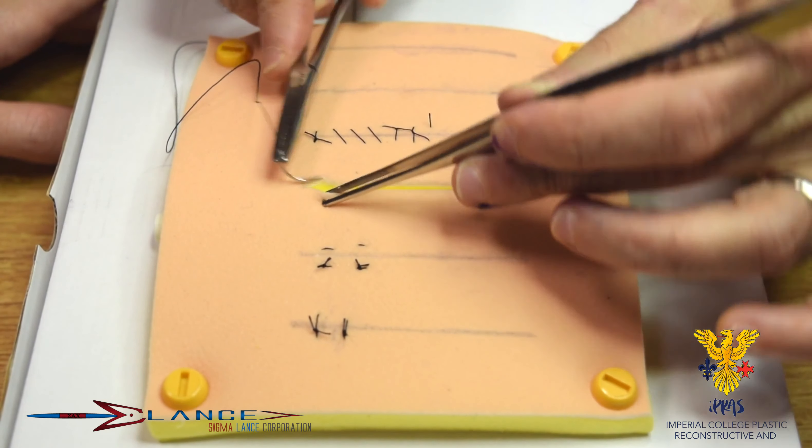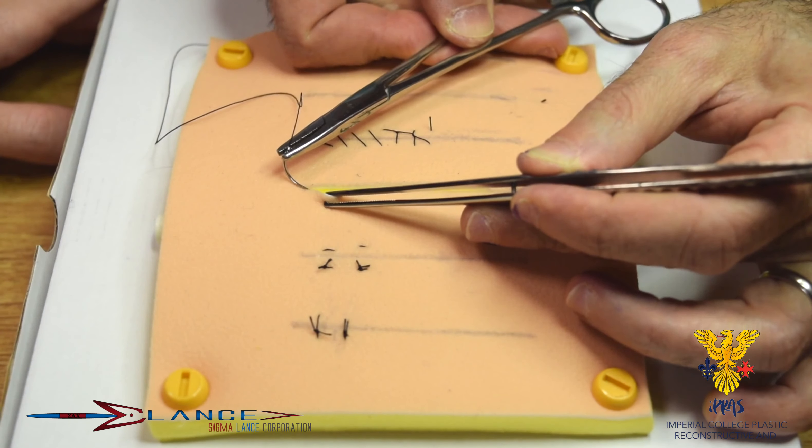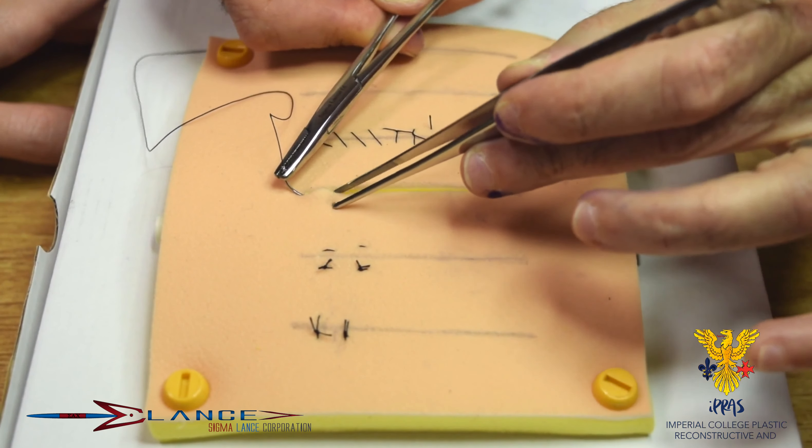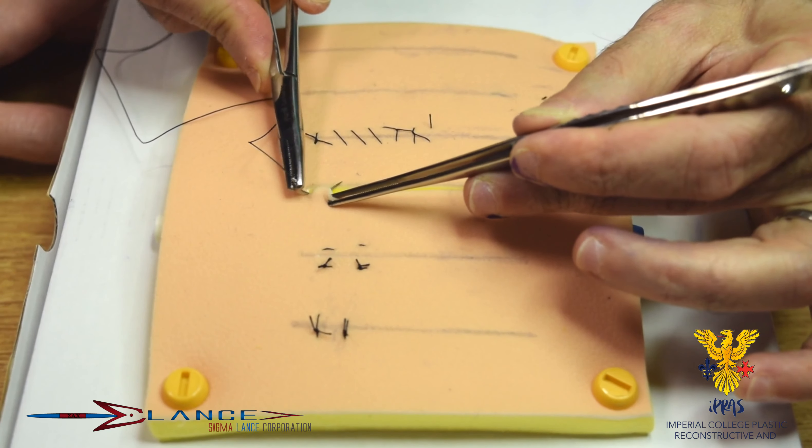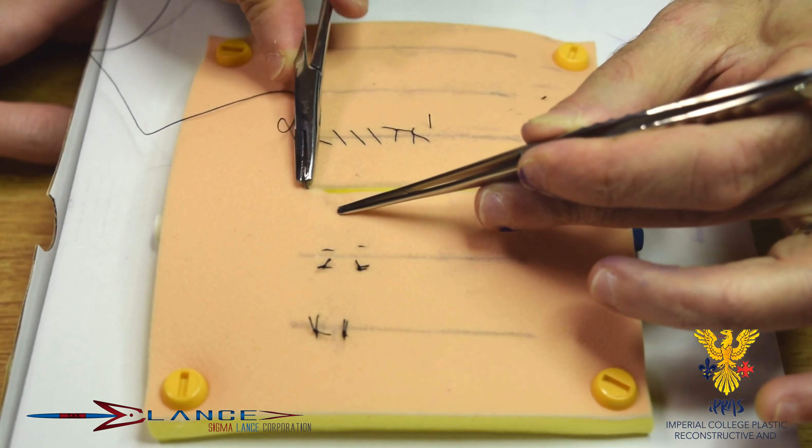Now, as we talked in the last, the subcuticular normally starts with a first stitch that holds the suture in and essentially is pretty much like your horizontal mattress up there.